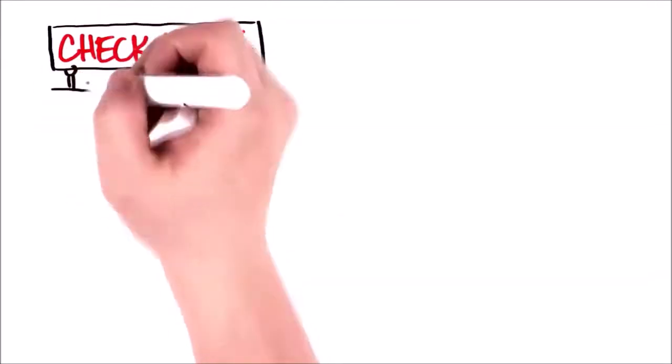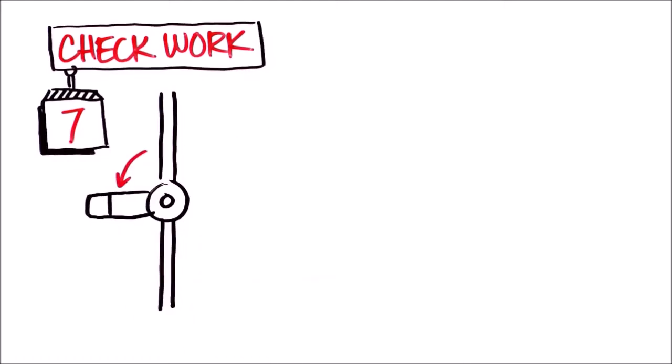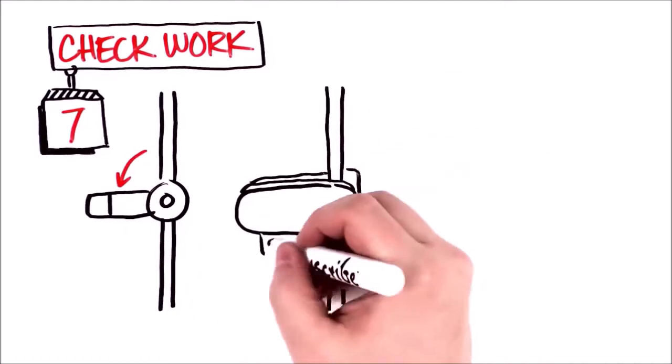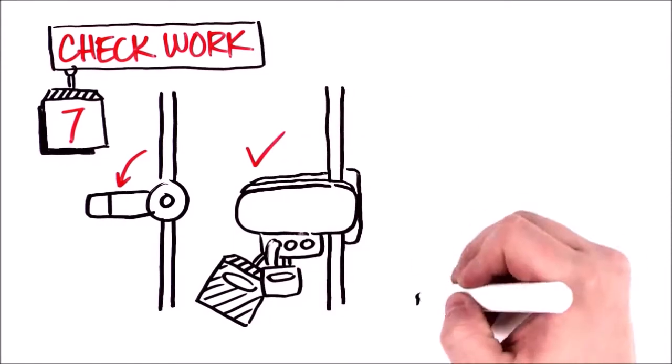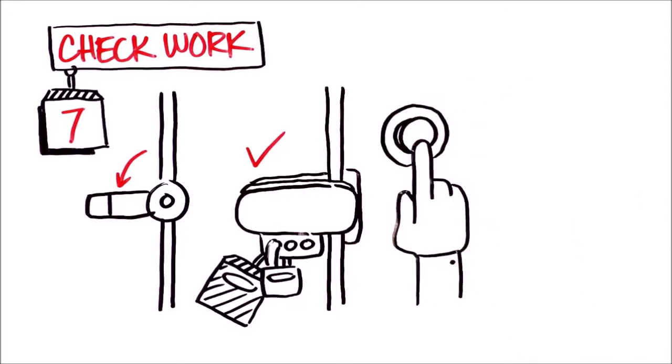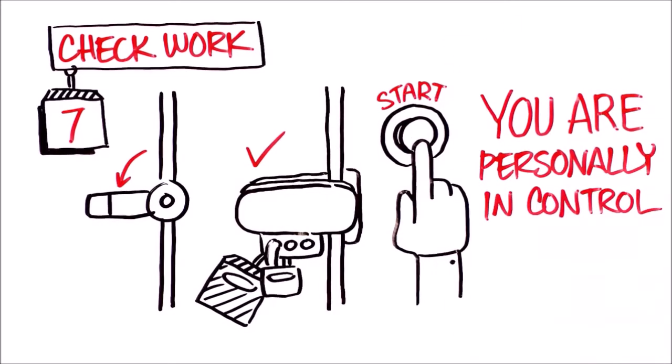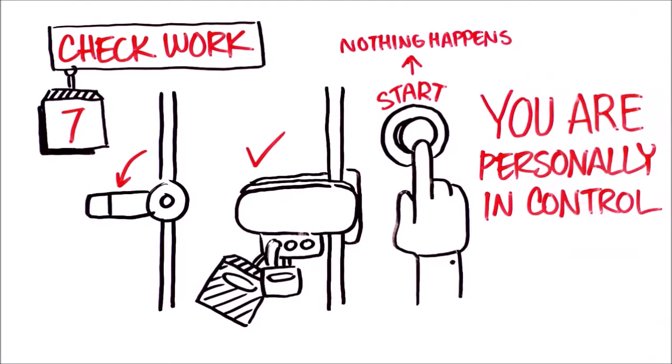This step is important. Check your work. Try it out. Verify that each step so far has been done correctly. That means that after properly doing a LOTO procedure, you confirm that all energy sources are isolated with a physical barrier. You verify that the equipment will not restart, and you are personally in control of the hazardous energy that ensures that equipment can't restart without your awareness.